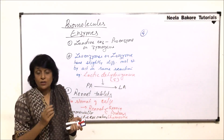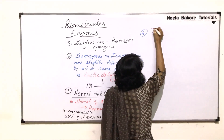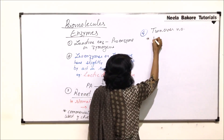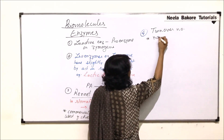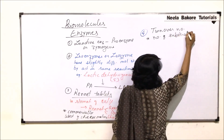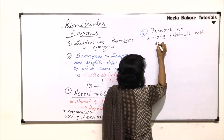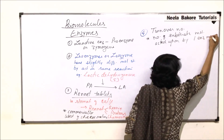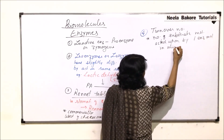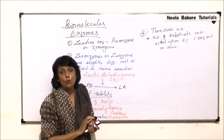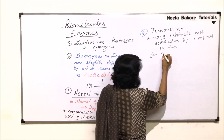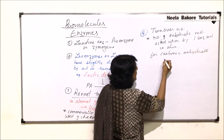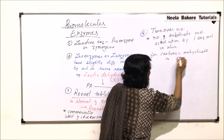The next important term is turnover number. In the case of an enzyme, the turnover number is the number of substrate molecules acted upon by one enzyme molecule in one minute. For carbonic anhydrase, this number is 36 million, making it the fastest enzyme.